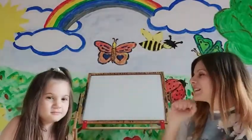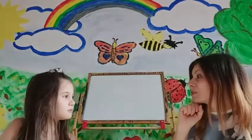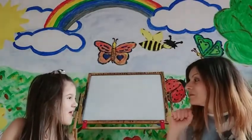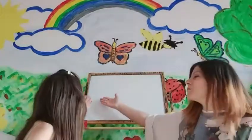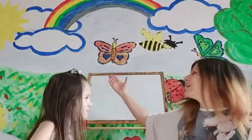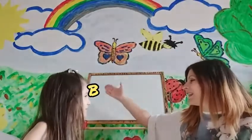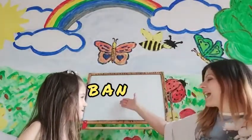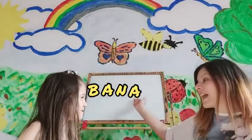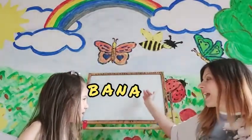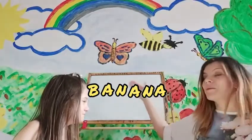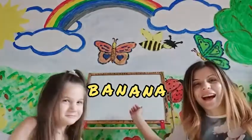Let's see. Can you spell banana? Yes. Let's spell it together. B, A, N, A, N, A. Banana. Great.